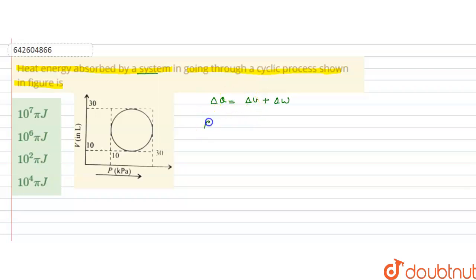But for a cyclic process, delta U is always, that is, change in internal energy is 0. It means, for this case, delta Q is equal to delta W.